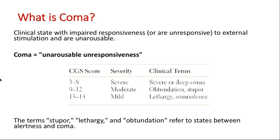Consciousness is maintained by a structure called the ARAS, or Ascending Reticular Activating System, which facilitates communication between the brainstem and the cerebral cortex, specifically the frontal cortex. Coma, on the contrary, is the opposite — where the person becomes unresponsive and unaware. It falls under the umbrella of disorders of consciousness, which includes coma, vegetative state, and minimally conscious state.